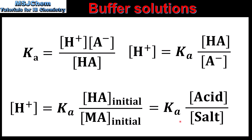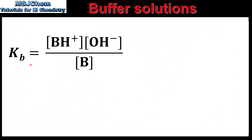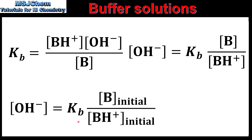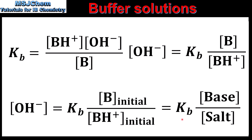Next we'll look at how to do this for a weak base, starting with the Kb expression. The Kb has the concentration of the conjugate acid and hydroxide ions in the numerator and the concentration of the weak base in the denominator. Rearranging, the concentration of hydroxide ions equals Kb multiplied by the concentration of the weak base over the concentration of its conjugate acid. The equilibrium concentration of the weak base equals its initial concentration, and the equilibrium concentration of the conjugate acid equals the initial concentration of the salt. So [OH⁻] = Kb × [base] / [salt].